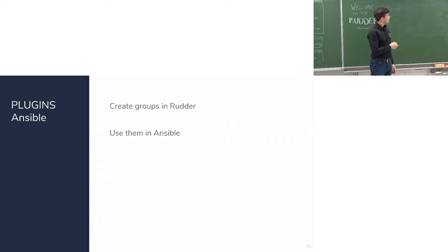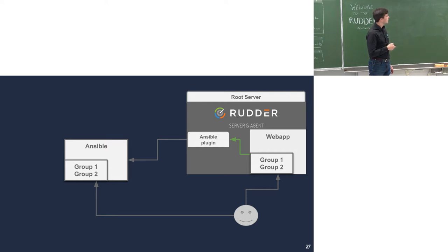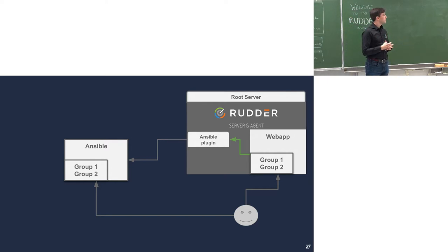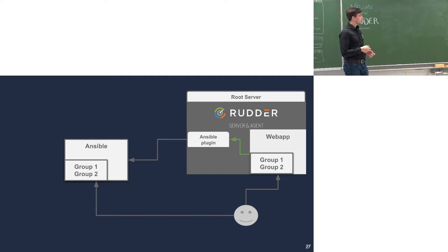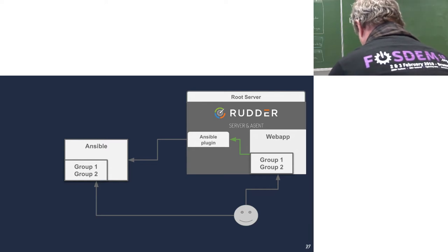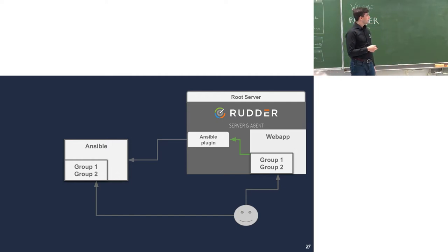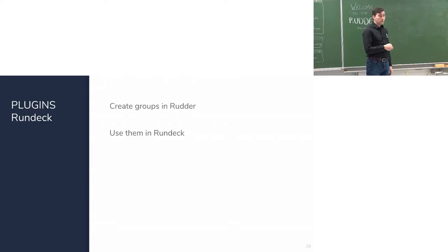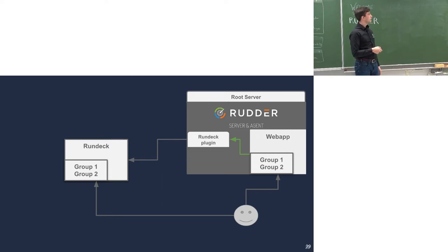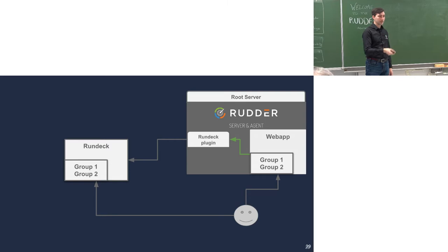There's an Ansible plugin. In Rudder you can create groups based on node properties or inventory — for example, an 'apache' group for nodes with Apache installed. The Ansible plugin exports those groups and synchronizes them with Ansible groups, so you can run Ansible commands directly on machines already organized in Rudder groups. The same can be done with Rundeck: export groups from Rudder and run Rundeck tasks using those groups.